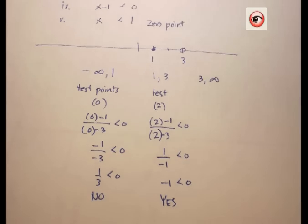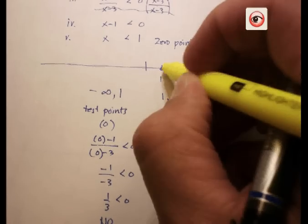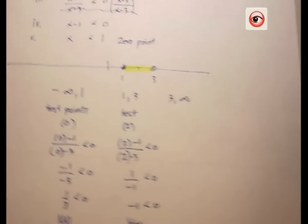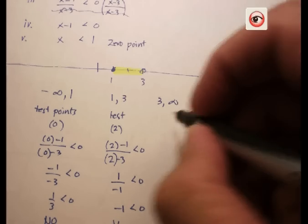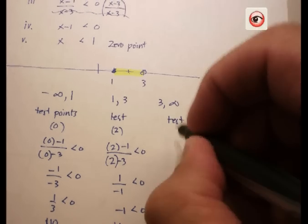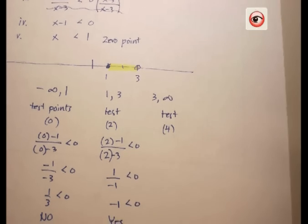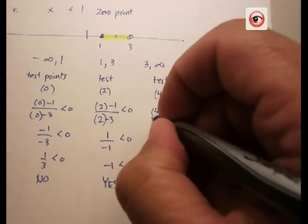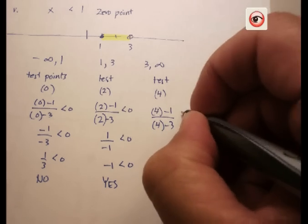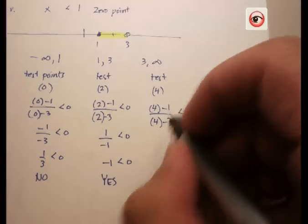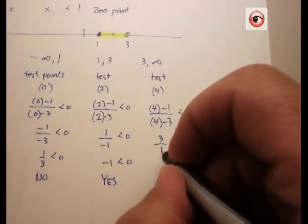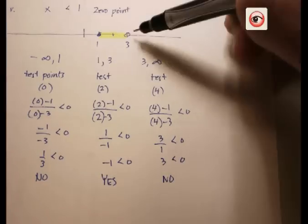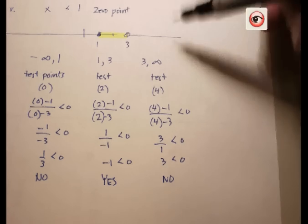Let's test the very last region, everything from three all the way up to positive infinity. Let's test four. Now I have four minus one over four minus three is less than zero. Four minus one is three, four minus three is one. Is three less than zero? The answer is no. So everything in here is not going to be shaded.